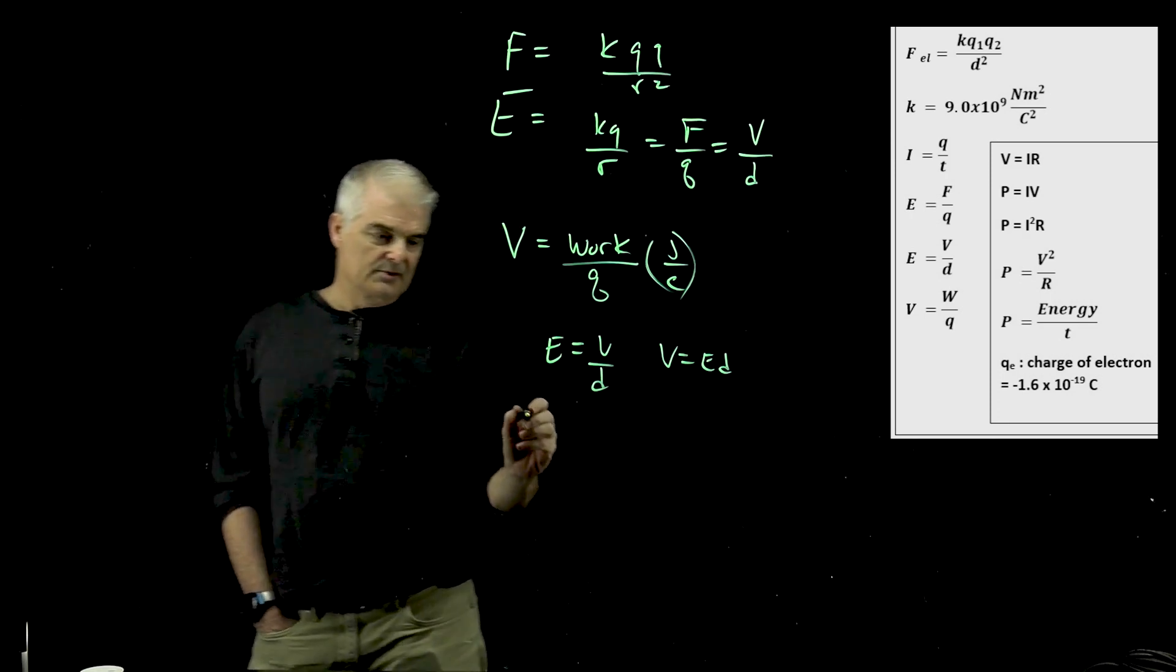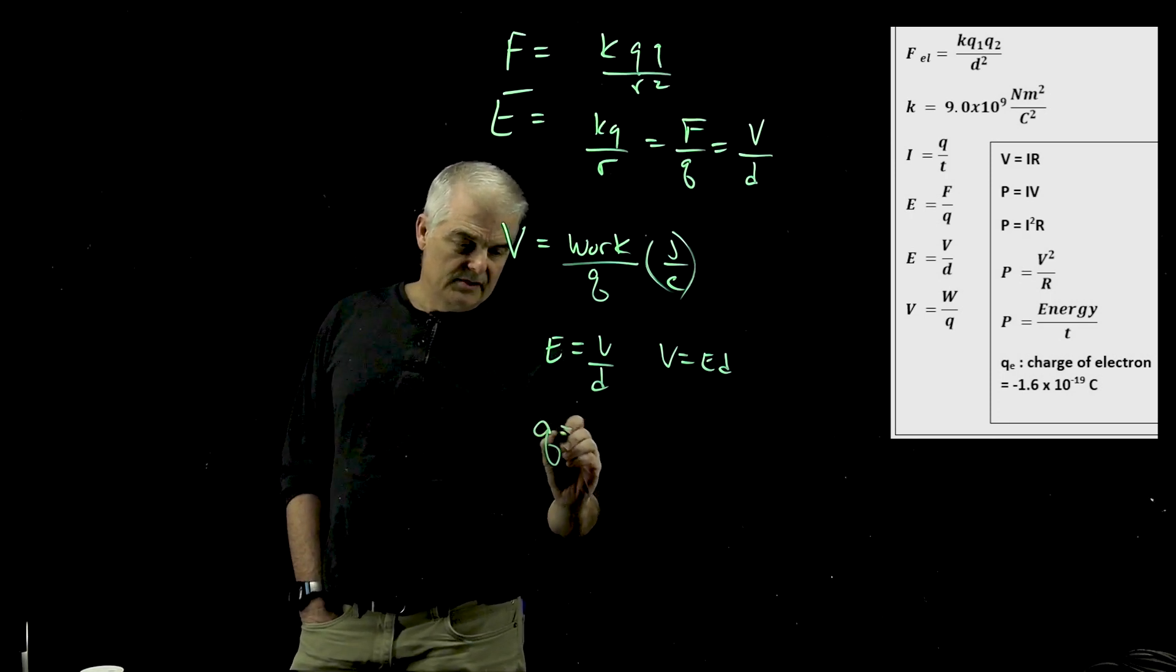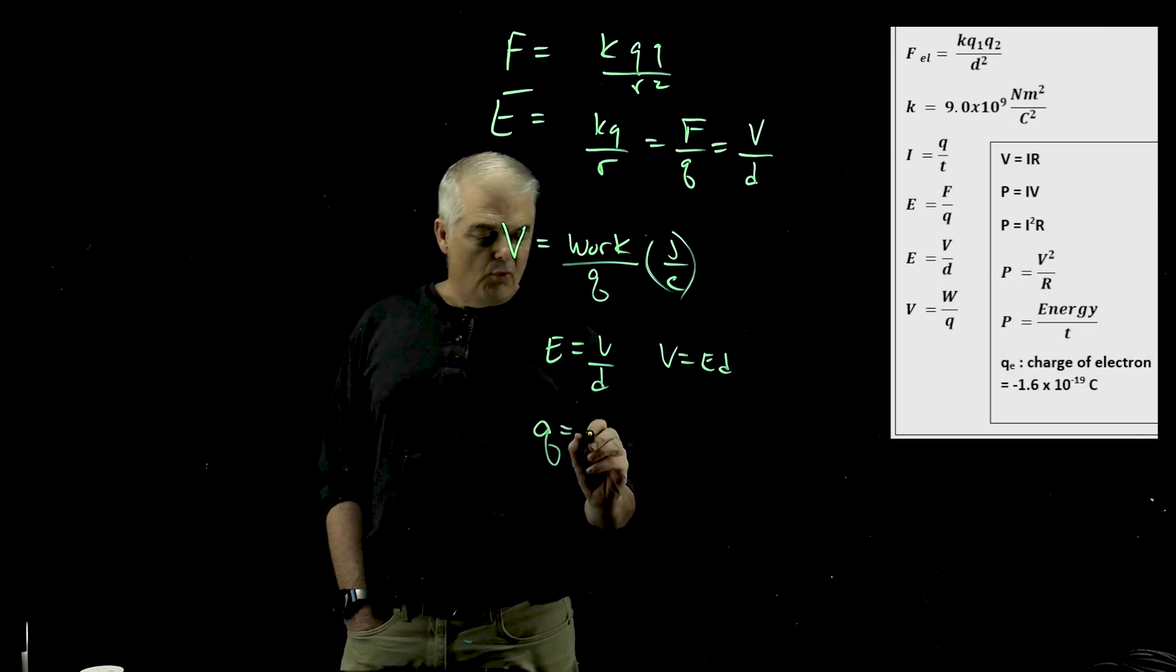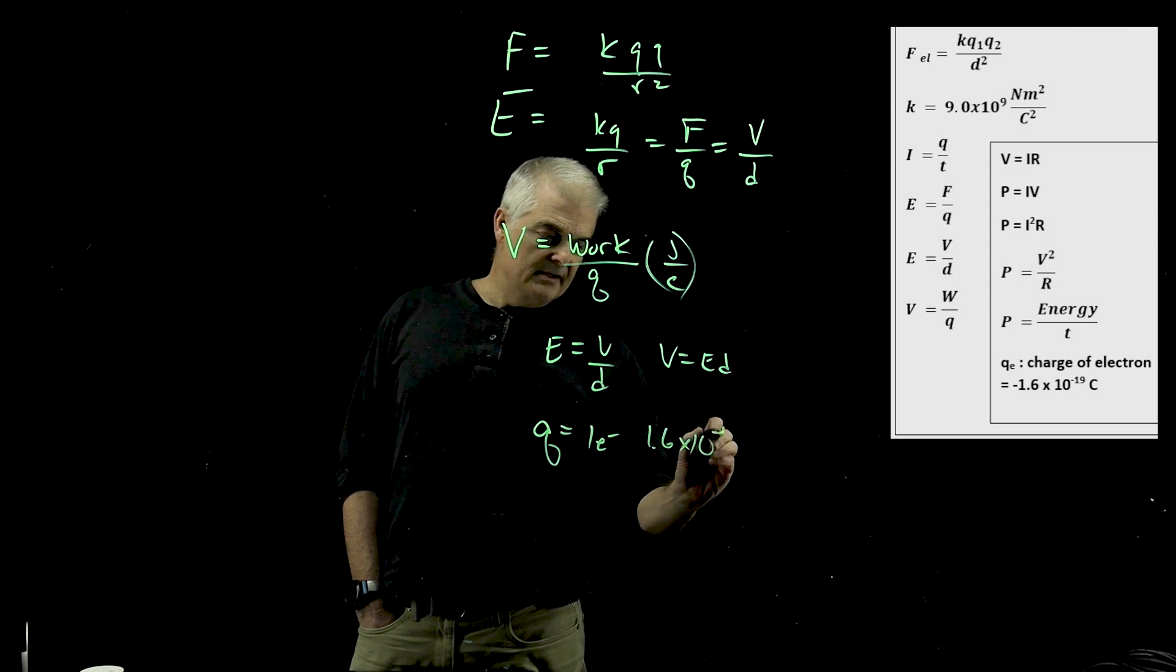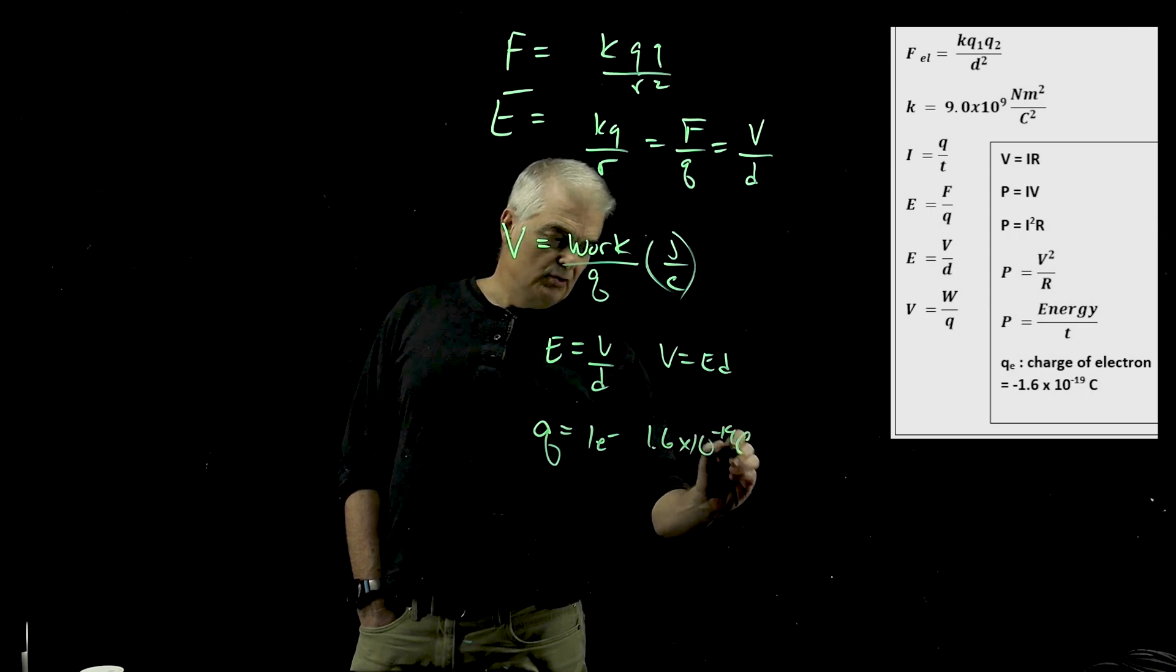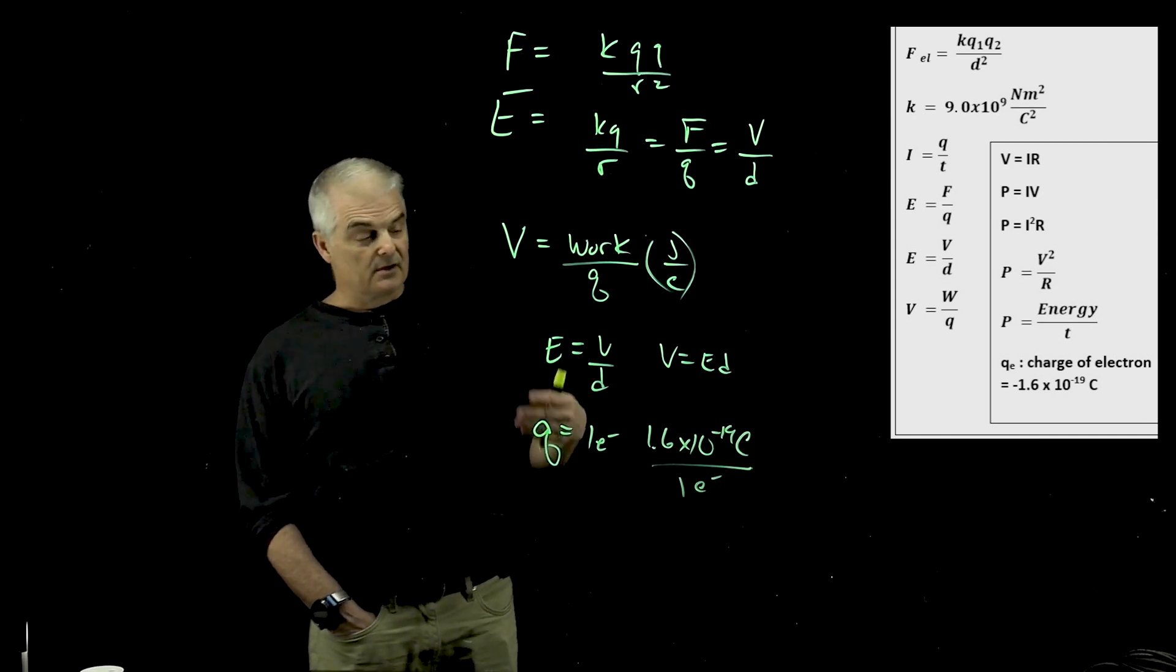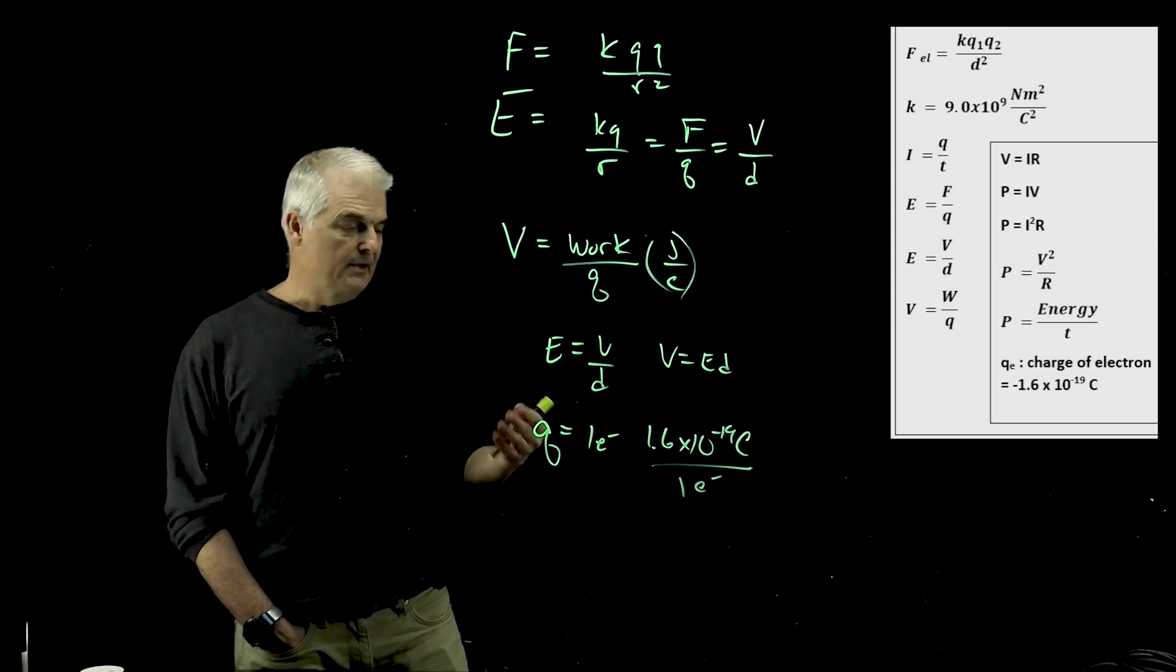R is something called resistance, and that has to do with more current electricity. Other things you're going to have to know, though, too, when you're doing these problems, is remember Q is the measure of the Coulombs. But if I have one electron, it has a charge of 1.6 times 10 to the minus 19 Coulombs. That's per one electron, or actually one proton, too. Electron would have a positive charge, and electron would have a negative charge.